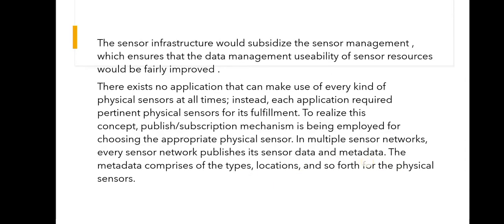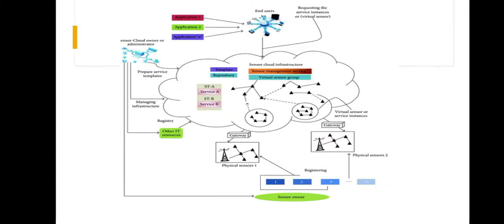Here we enter into the architecture of sensor cloud. First, let's look at the architecture diagram for better understanding. There are three major components in this architecture. The first one is the sensor owner. Sensor owner plays a major role from the business perspective — they purchase physical sensor devices deployed over different geographical locations and lend these devices to the sensor cloud.